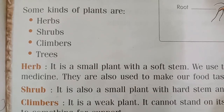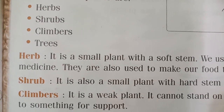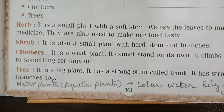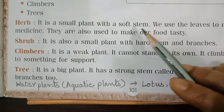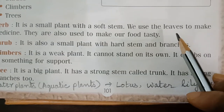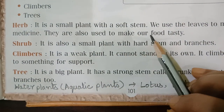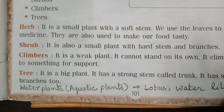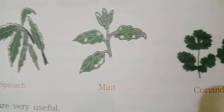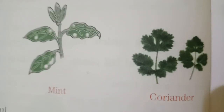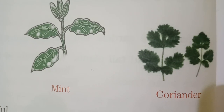Some kinds of plants are herbs, shrubs, climbers, and trees. Herbs — it is a small plant with soft stem. We use the leaves to make medicine. They are also used to make our food tasty. Like spinach, mint, and coriander. Coriander makes our food tasty, isn't it?